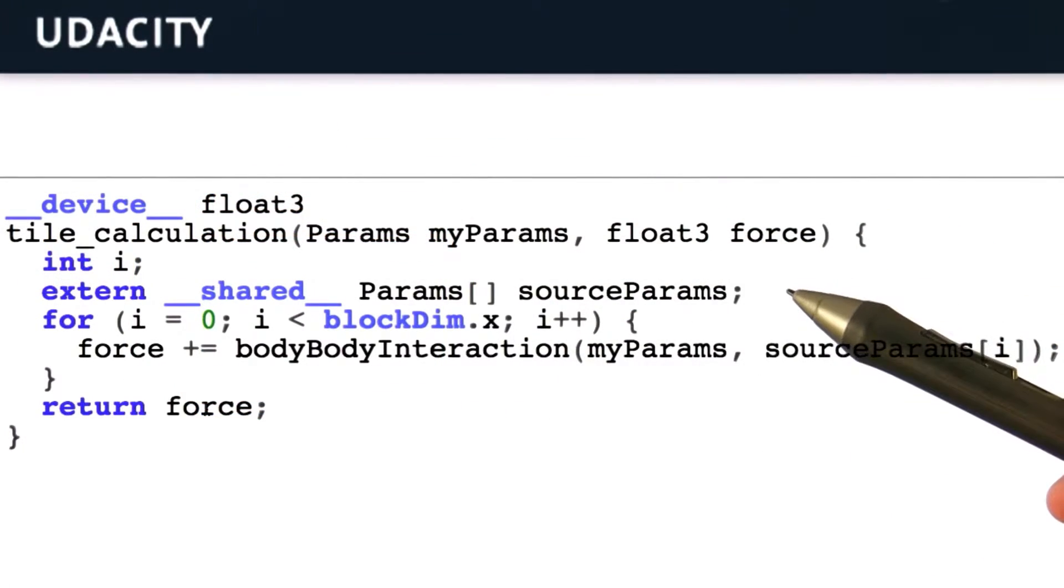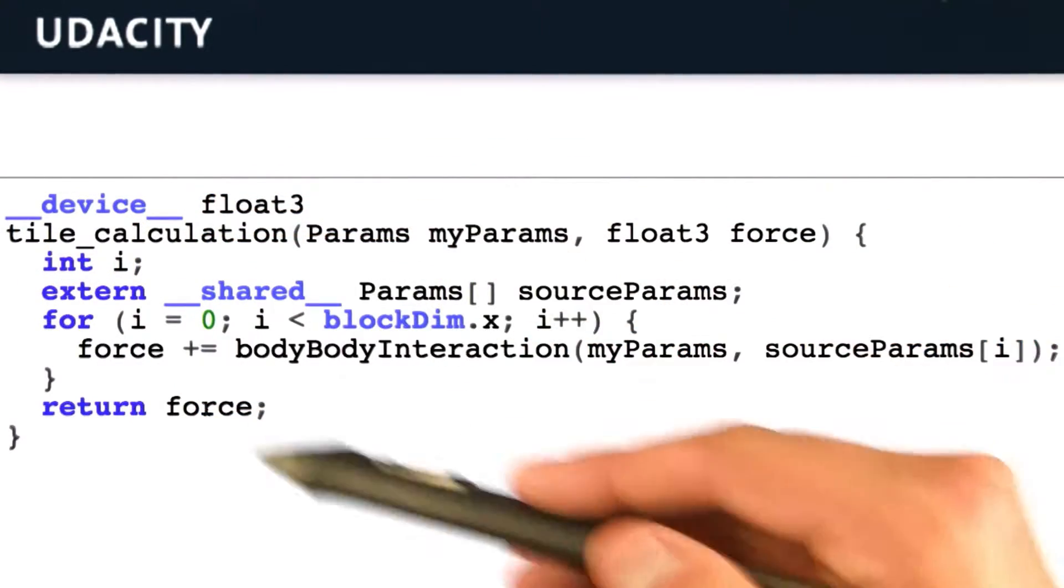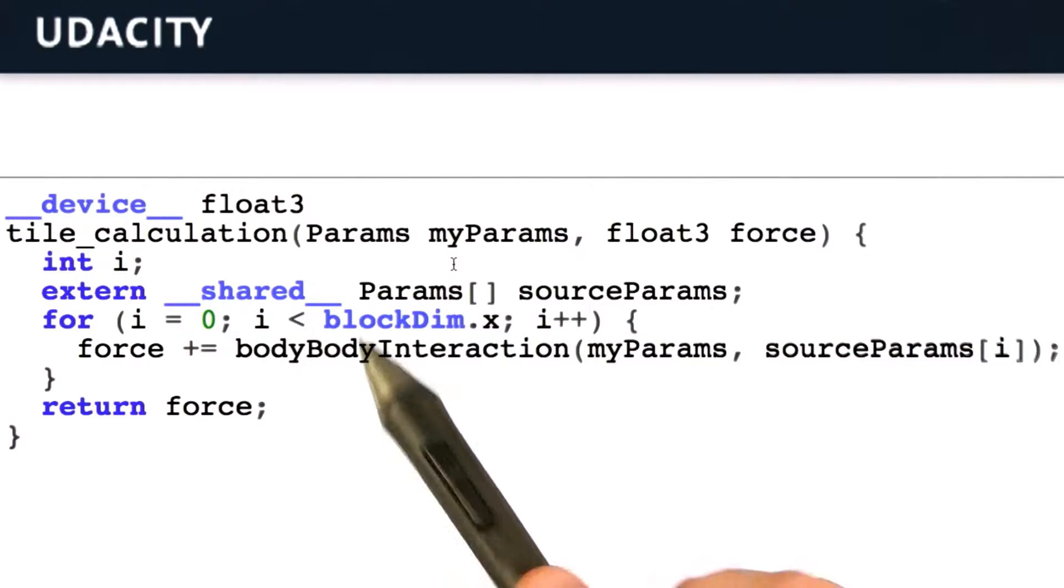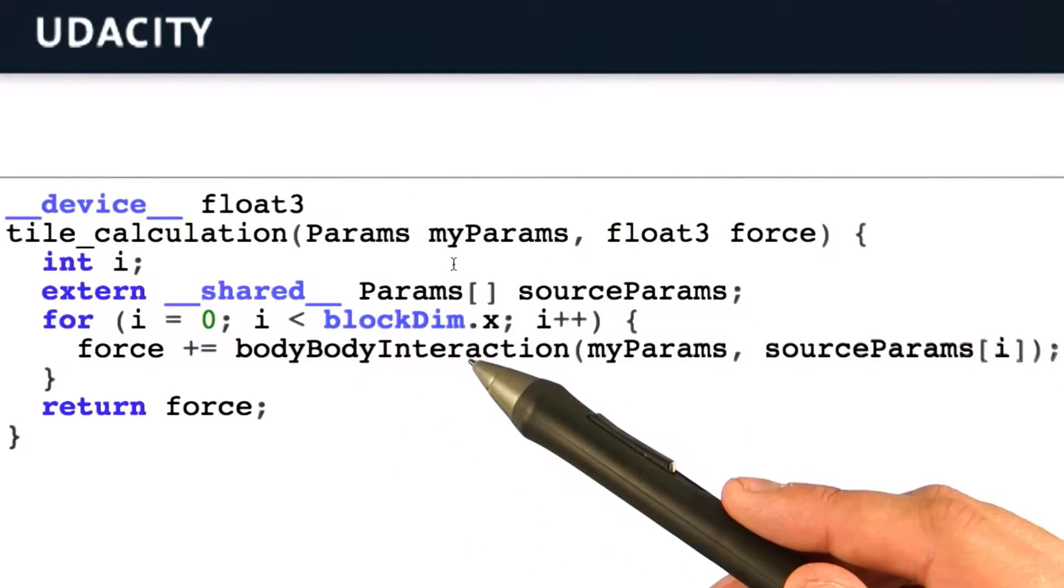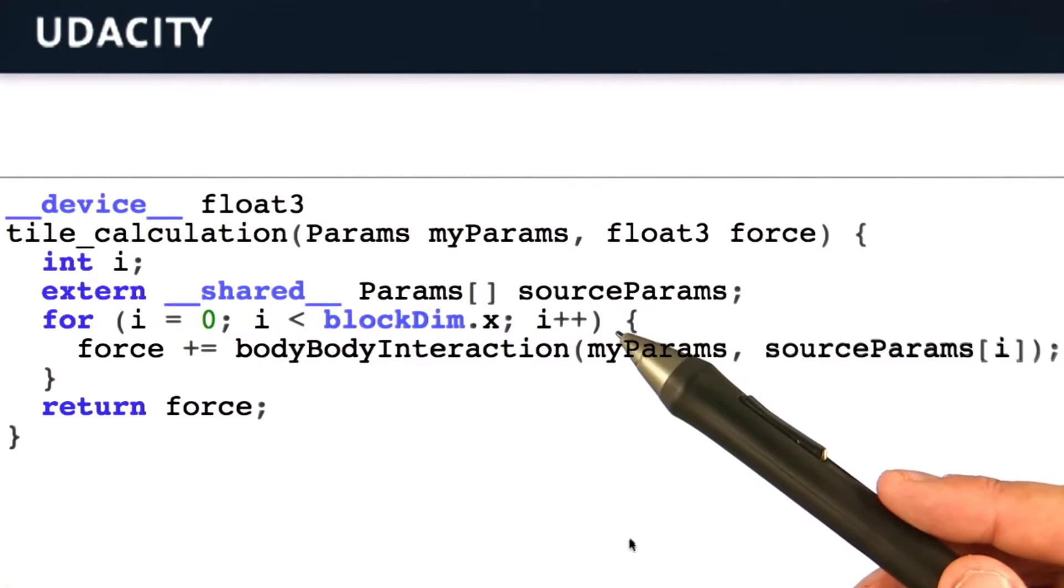The code for this is really simple and we're showing it here. Our kernel code simply loops n over p times over this particular routine. It accumulates p by p interactions onto p threads in each iteration.